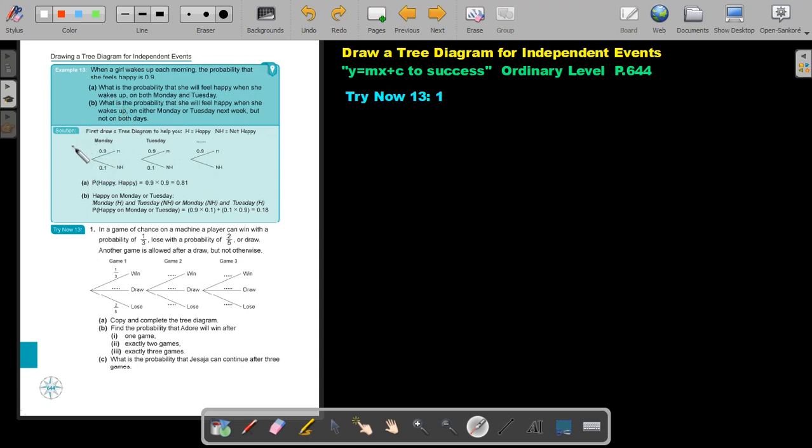Every day, this same is happening. Happy 0.9, not happy 0.1. Happy 0.9, not happy 0.1.